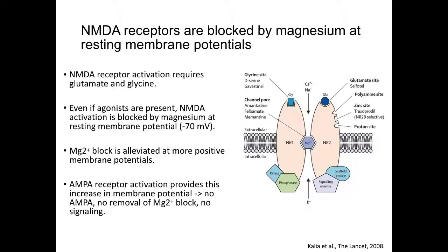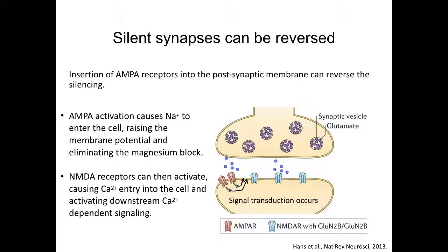So no AMPA receptors means no magnesium block removal and no NMDA signaling. Silent synapses can be unsilenced by insertion of AMPA receptors into the synapse. Activation of AMPA receptors causes sodium to enter the cell and raises the membrane potential, eliminating the magnesium block of the NMDA receptors. The NMDA receptors are permeable to calcium, whereas AMPA receptors are usually impermeable, and the calcium influx produces full depolarization and activation of signaling.